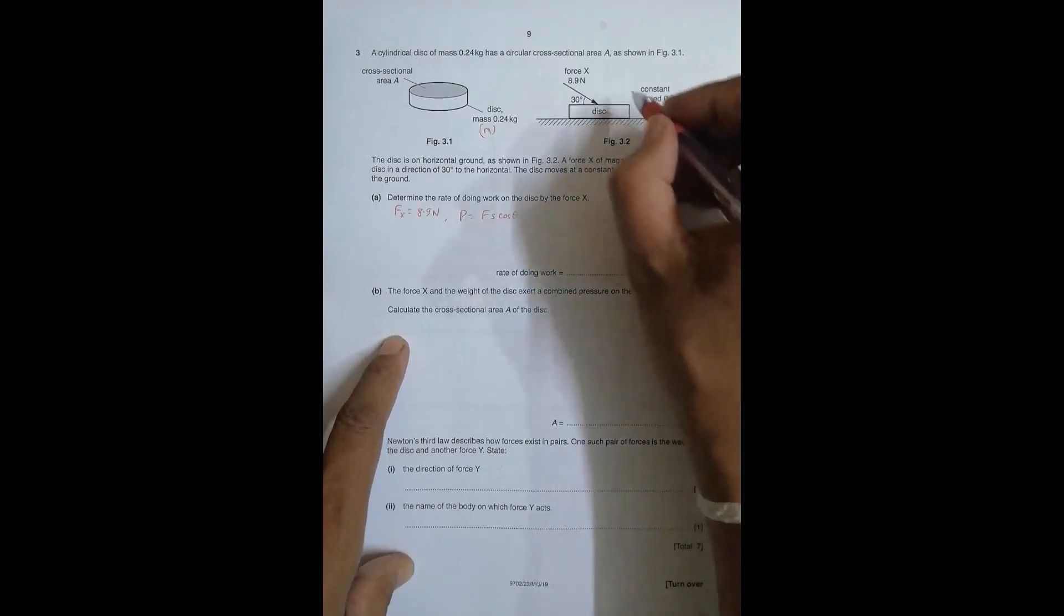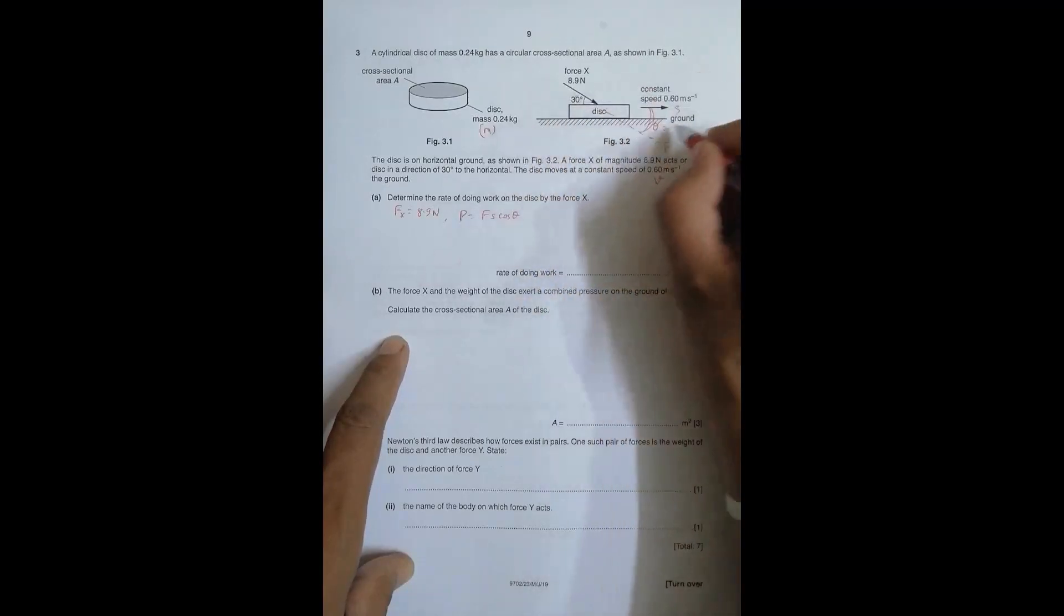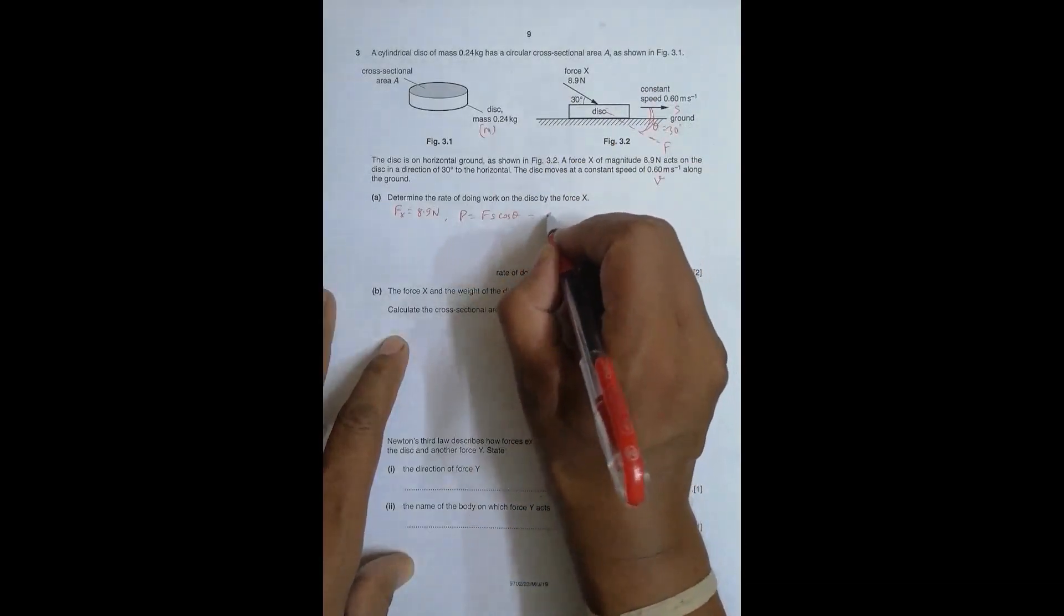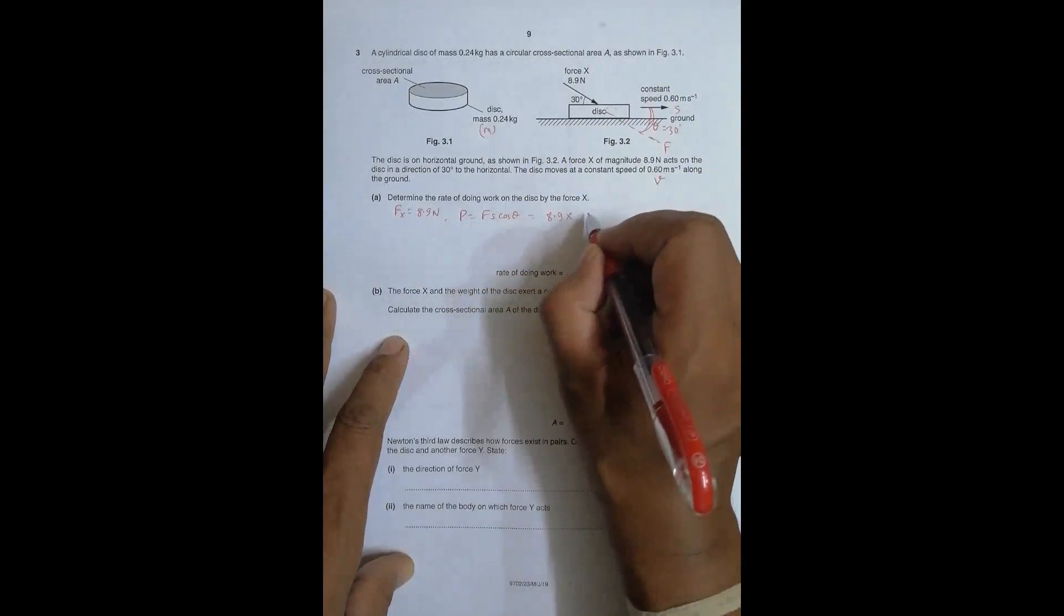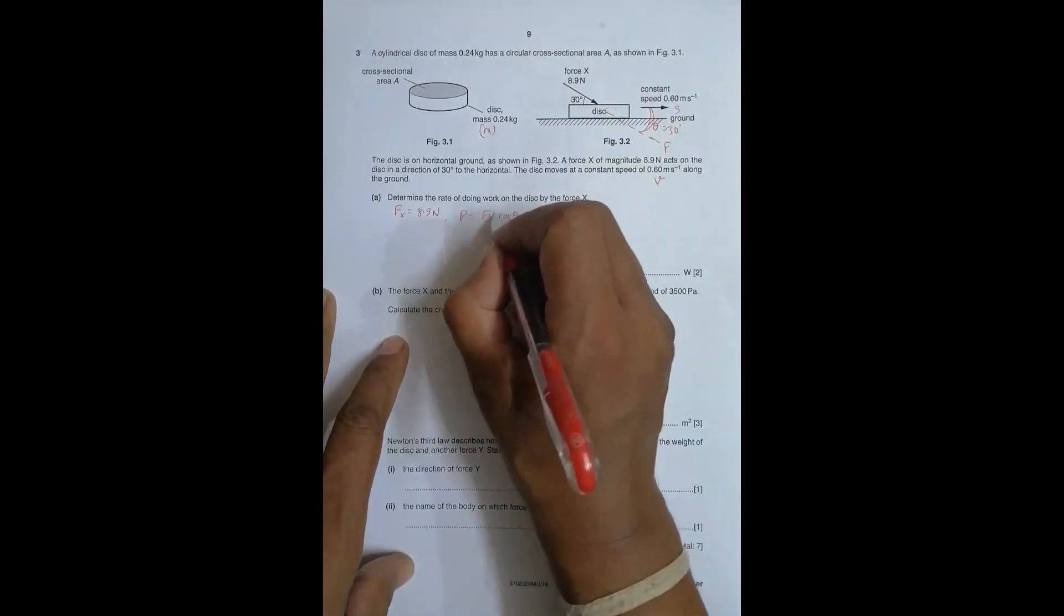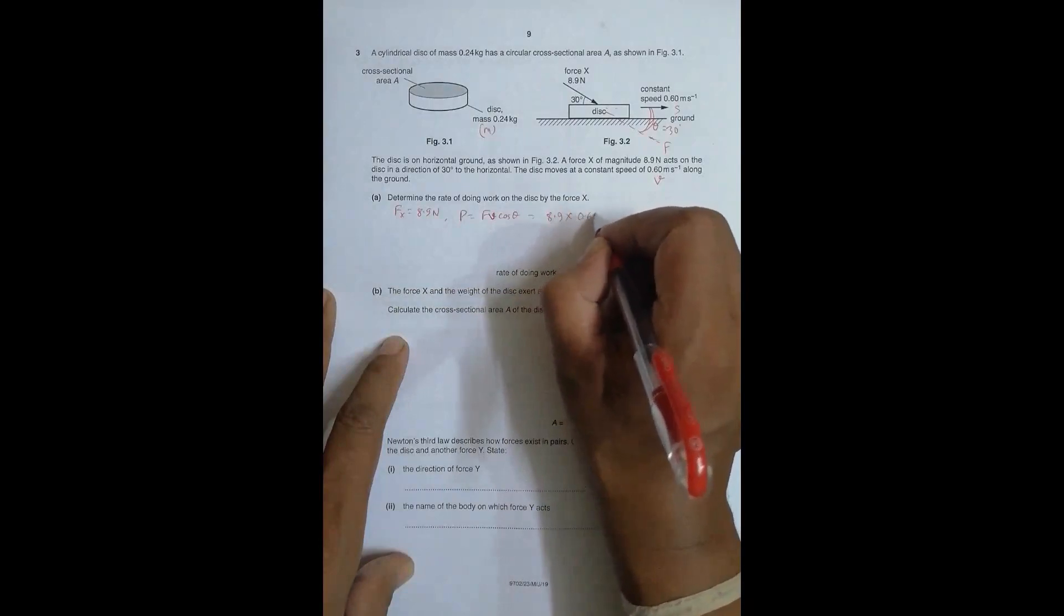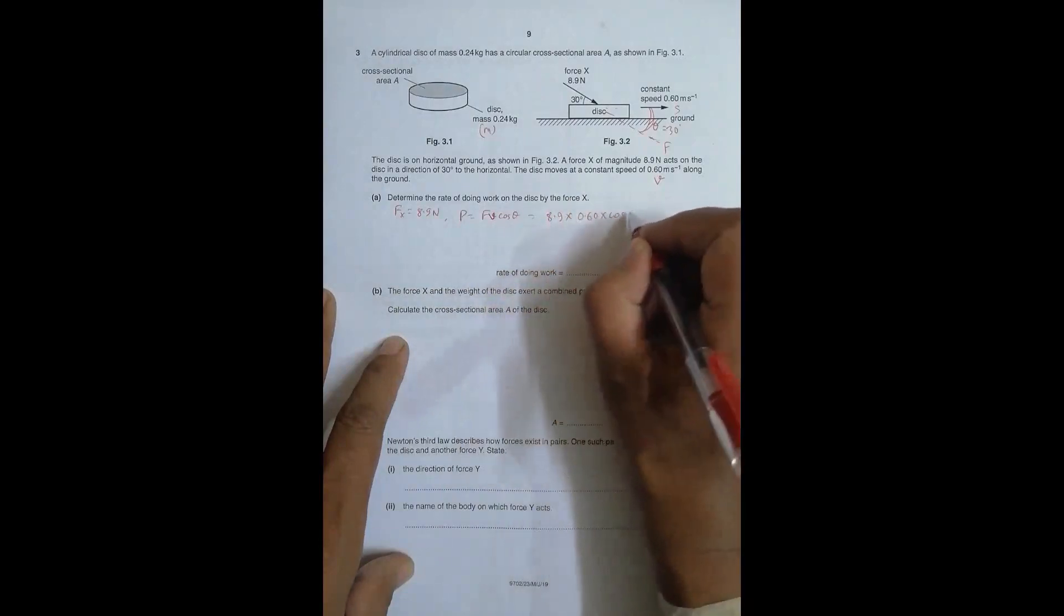So force = 8.9, velocity is 0.60, times cos 30 degrees. If I do the calculations, the value will be something like this.